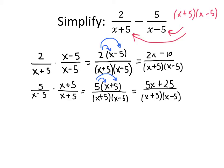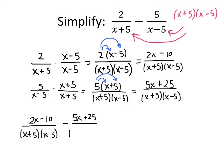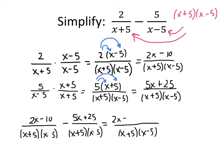Now we're ready to combine these two fractions together. We have our first fraction, which is equivalent to (2x minus 10) divided by (x plus 5) times (x minus 5), minus our second fraction, which is equivalent to (5x plus 25) divided by (x plus 5) times (x minus 5). Since our fractions now have the same denominator, we can combine them into one big fraction. Same denominator: (x plus 5) times (x minus 5). And on the top we have 2x minus 10 minus the quantity (5x plus 25).